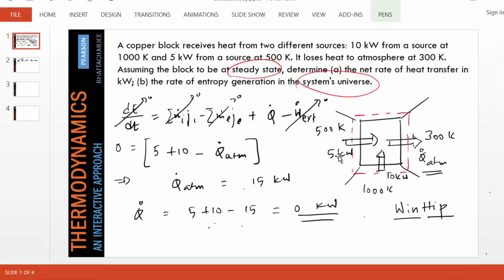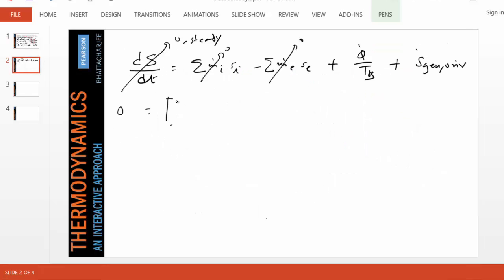So the equation simplifies: 0 equals Q dot over Tb. Let's expand it. Q dot over Tb means entropy carried by heat into the system. We see 5 kilowatts is going in at 500 Kelvin, 10 kilowatts at 1000 Kelvin, and 15 kilowatts is coming out at 300 Kelvin. So if I can remember these numbers, it will be 5 divided by 500, it will be 10 divided by 1000, and 15 divided by 300.